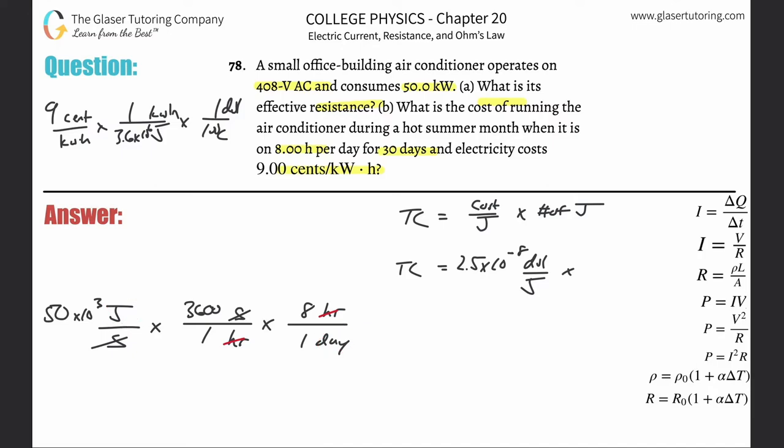Now this would tell me how many joules are being consumed per day, but I don't want to know per day. What do I want to know? I want to know over a total of 30 days. So simply multiply this now by 30 days, and look what's going to be canceled: now the days go bye-bye, and what I'm left with now is just the total number of joules. How beautiful is that? So 50 times 10 to the 3, multiplied by 3600, multiplied by 8, and then by 30, and we're going to get a value of about 4.32 times 10 to the 10 joules.